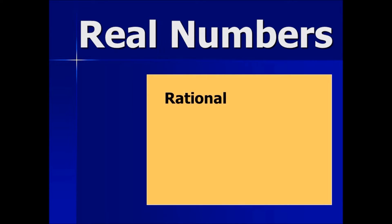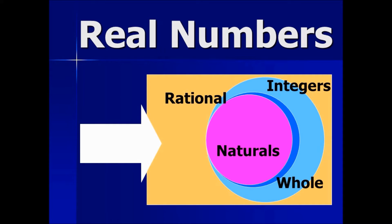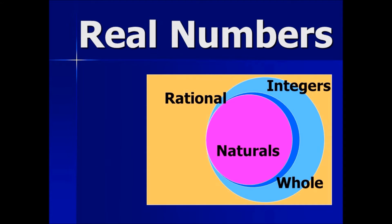Rational numbers are made up of natural numbers, whole numbers, and integers. Rational numbers can be perfect square roots. Rational numbers can be made into a fraction or a ratio. In decimal form, they end or they repeat. You can look at earlier videos in this series to get a more detailed explanation of rational numbers and each of its subsets.